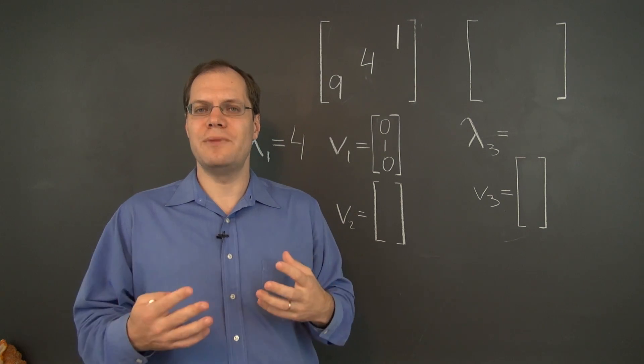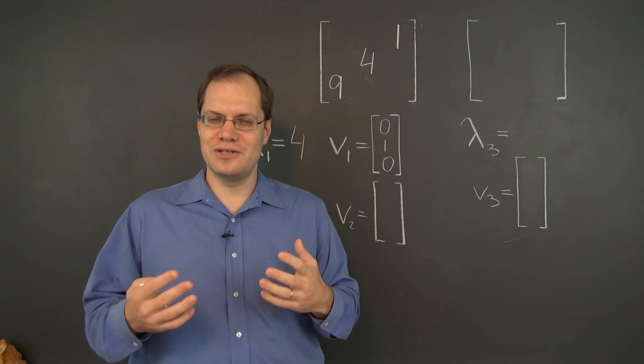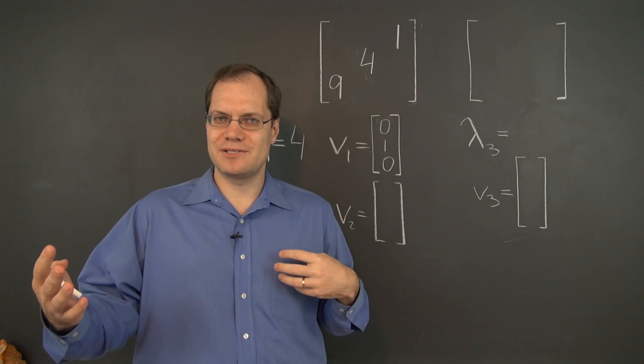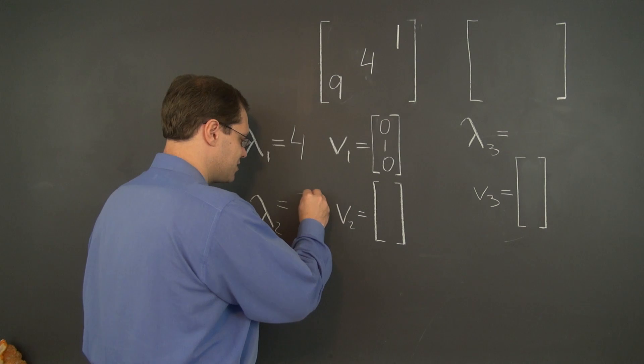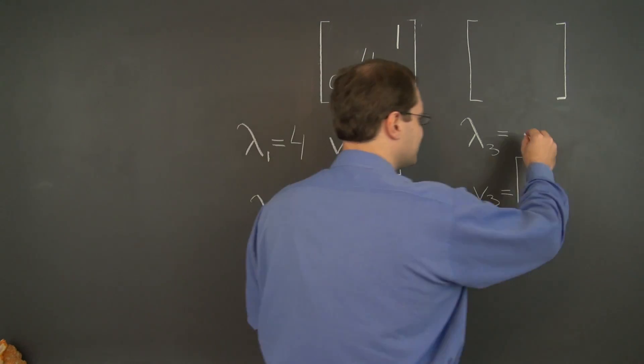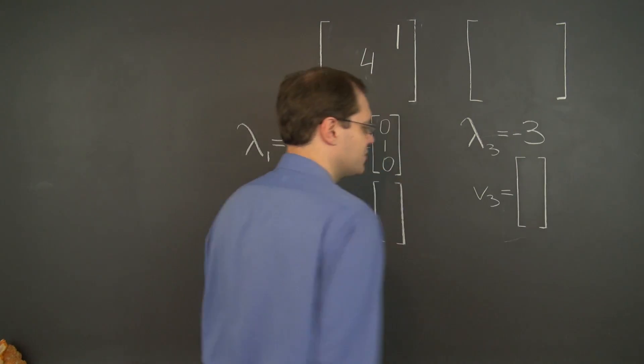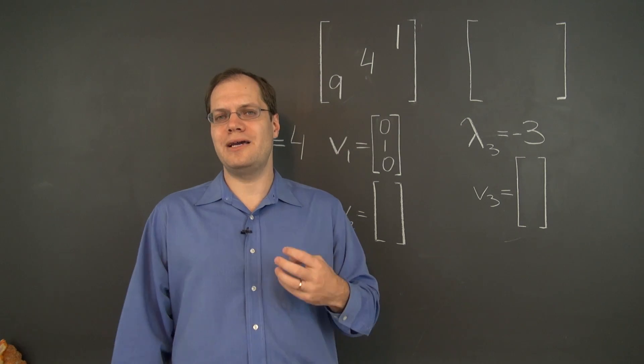So we're looking for two numbers that are opposite of each other, and their product is minus nine. So of course, that's three and negative three. So we have just determined the two remaining eigenvalues.